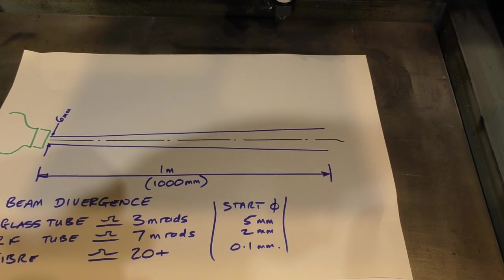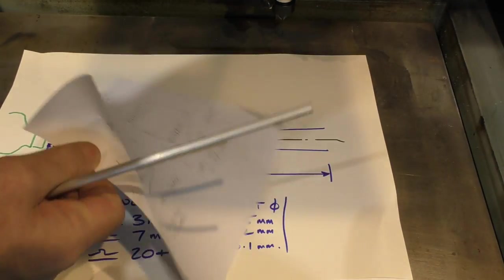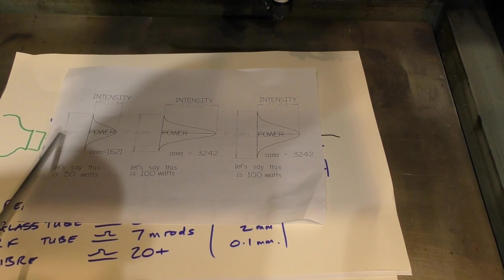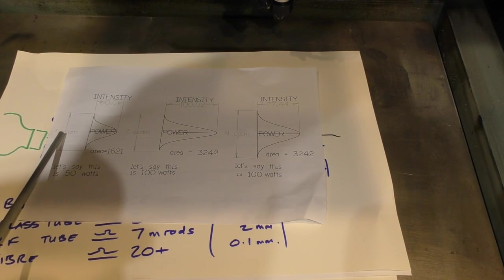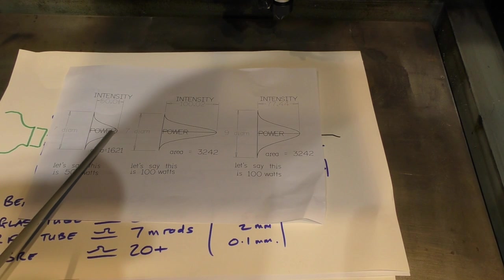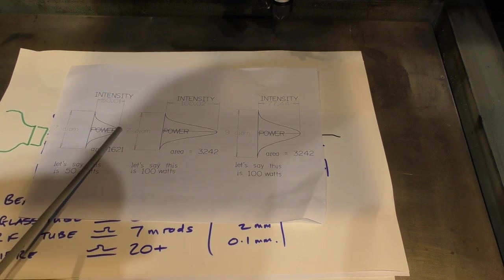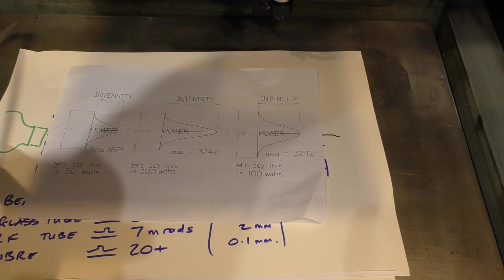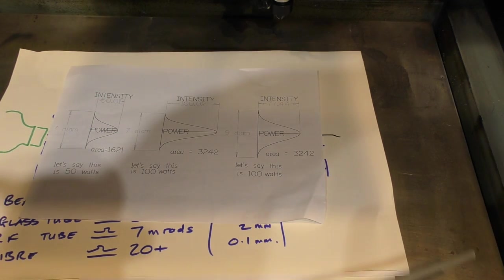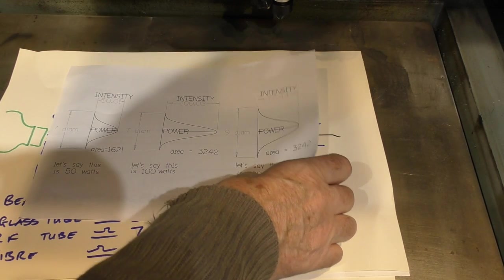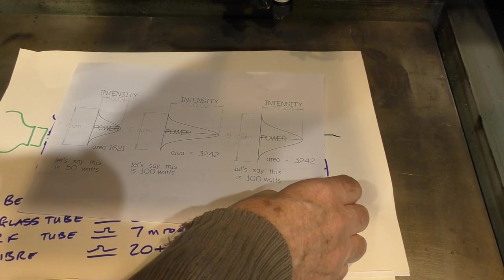what we're ideally trying to do is we're trying to control the diameter of the beam so that it does not change its diameter. So we've got ideally 50 watts of intensity here and 50 watts of intensity here. So the cutting capability at both corners of your machine remains constant. So what's the idea of a beam expander?